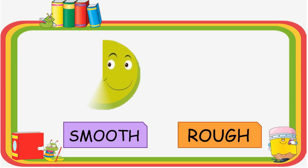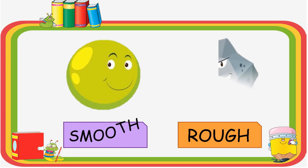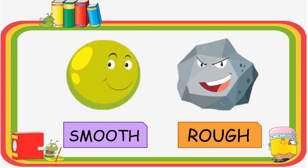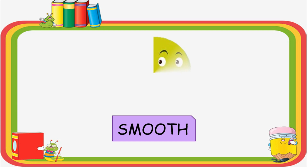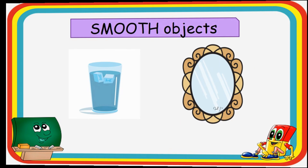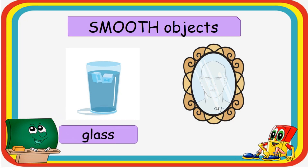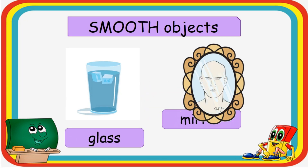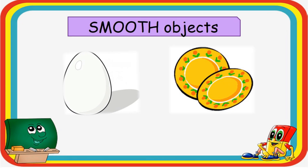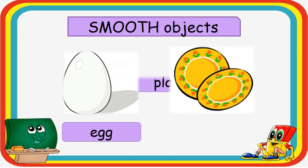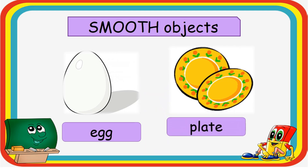Next, let's have the smooth and rough objects. Here are the examples of smooth objects: glass, mirror, egg, and plate.